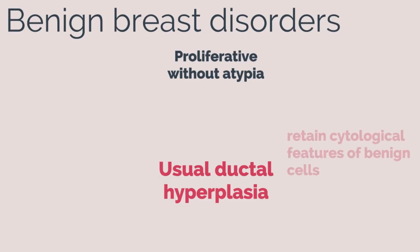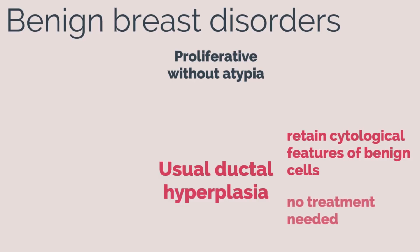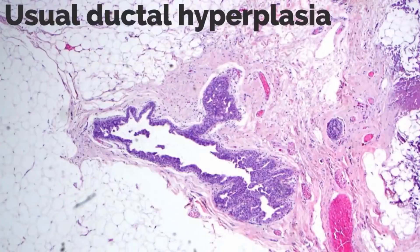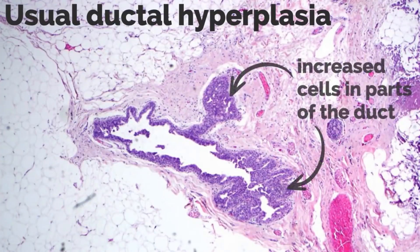Usual ductal hyperplasia retains cytological features of benign cells and no additional treatment is needed. Microscopically, there are increased cells in parts of the duct.